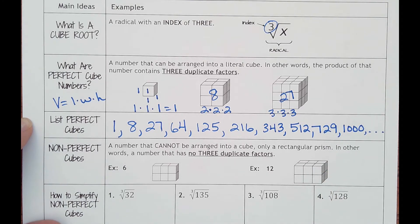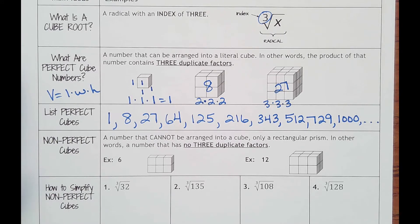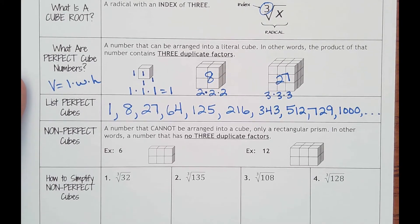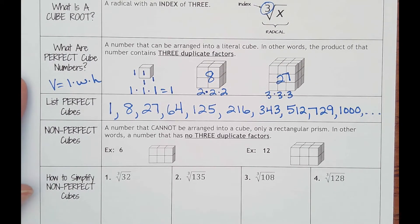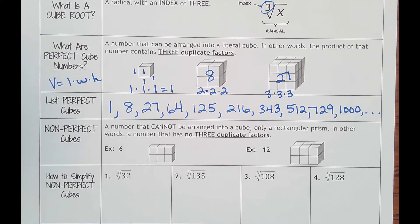So of course, if we got perfect cubes, we got non-perfect cubes. That's a number that cannot be arranged into a cube, only a rectangular prism, some kind of box like a kleenex box. In other words, a number that has no three duplicate factors.